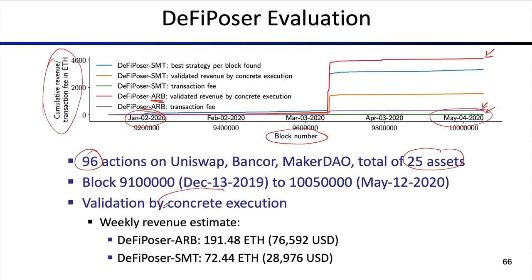It's quite important to perform concrete execution to verify whether what your models tell you is valid. The models are a representation of reality and might not always represent reality accurately. Overall, DeFiPoser ARP generates significantly higher revenue. However, we modeled the bZx platform in the SMT solver and found that DeFiPoser SMT was able to detect the bZx attack — something DeFiPoser ARP is not able to do because there was no cycle in that particular attack.